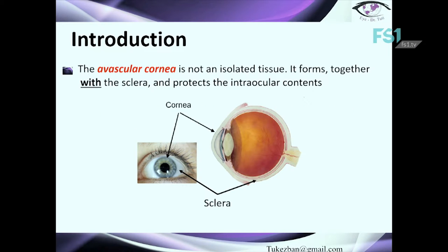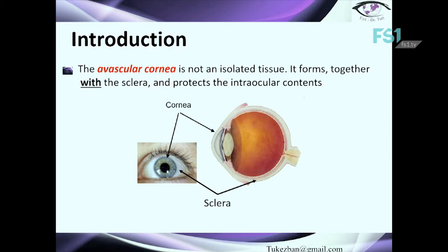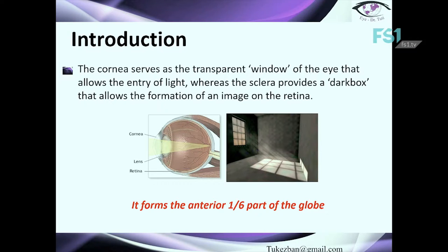What is the cornea? The cornea is an avascular tissue and it's not isolated — it forms together with the sclera and protects the intraocular structure of the eye. The cornea serves as the transparent window of the eye that allows the entry of light, whereas the sclera provides a dark box that allows the formation of the image on the retina. It forms the anterior one-sixth part of the globe.